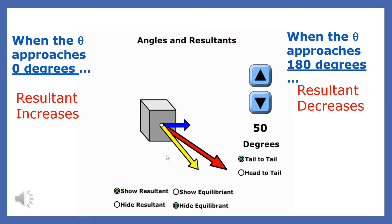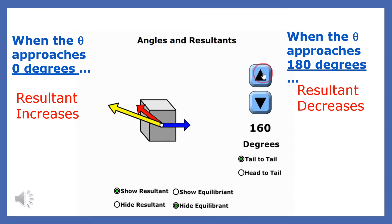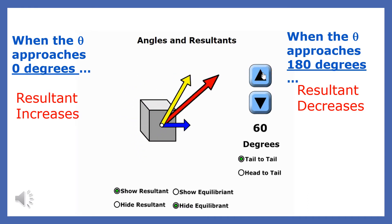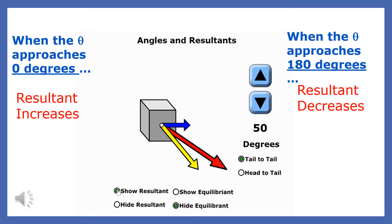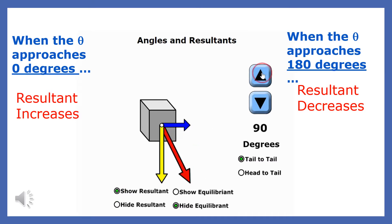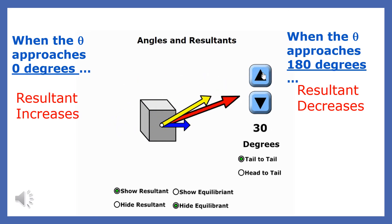Look closely at this animation. The red arrow represents the resultant of the blue and yellow forces. Notice that the resultant gets larger when the angle between the forces approaches zero, and the resultant gets smaller when the angle approaches 180 degrees. The more the two forces act in the same direction, the greater the resultant, and the more the forces act in opposite directions, the smaller the resultant.